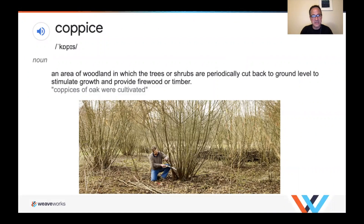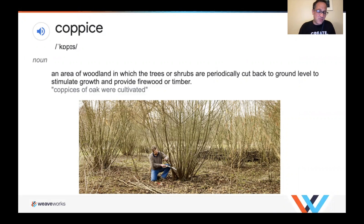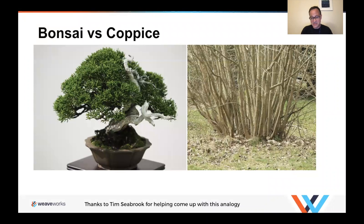I'd like to propose a different analogy around coppice. Coppice is woodland where you just cut it right back to the ground and it regrows super fast — usually woods like hazel and willow. It's a way of farming woodland in a much more dynamic way than traditional forestry. My analogy — and thanks to Tim Seabrook, who I discussed this with — is bonsai versus coppice. Bonsai are trees that are super manicured, looked after, individually crafted. Coppice is exactly the opposite: we just cut it down and it regrows.